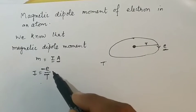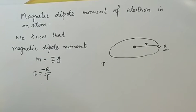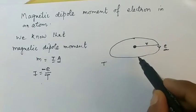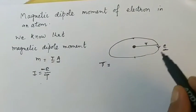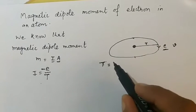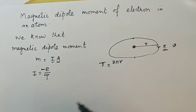The current is equal to charge, that is minus e, divided by time period. The time period is the time taken to complete a full revolution. If the velocity of the electron is V, then the time period is equal to the total path covered, that is 2πr, divided by velocity.